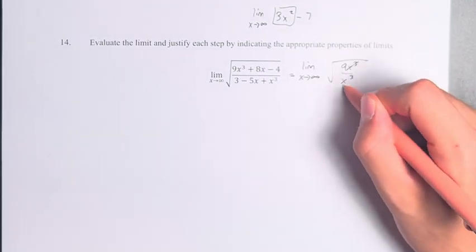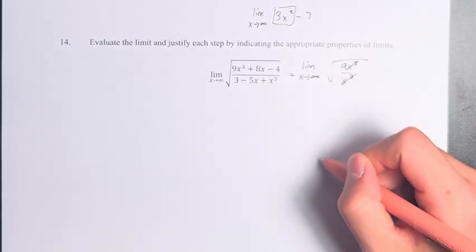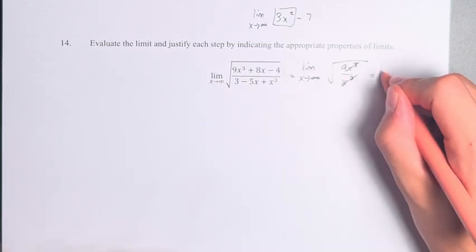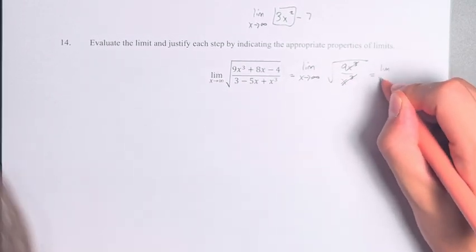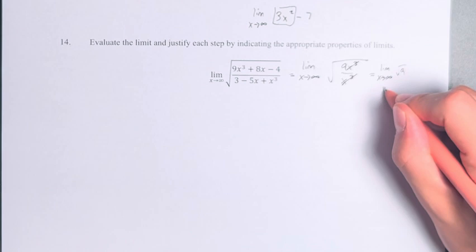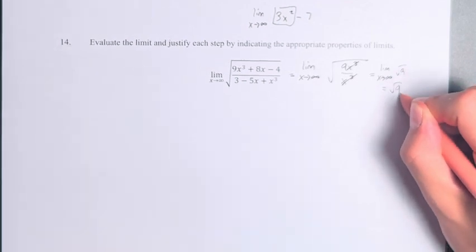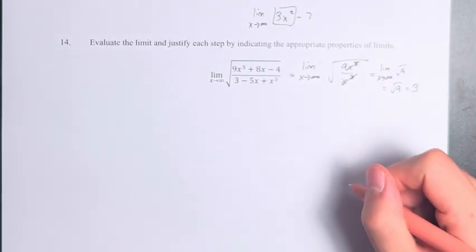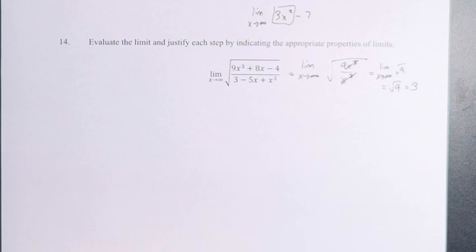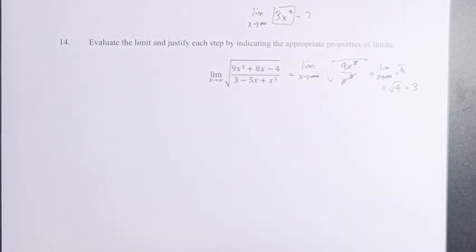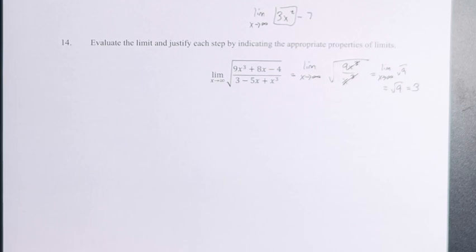We can have x cubed cancel in the numerator and denominator, leaving the limit as x approaches infinity of the square root of 9, which is just a constant equal to 3. That's the quick and easy way. We can also do it the longer way, step by step, using the properties of limits.